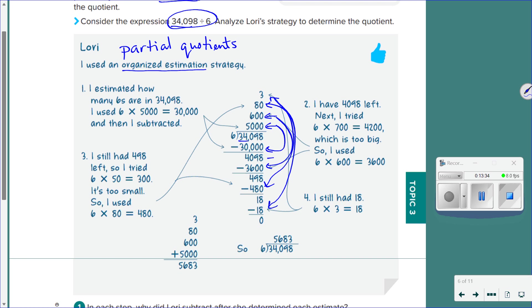She just basically took it by place. She said, started at 34,000. The closest she'd get was 30,000. Then she said, okay, I've got 4,000 left. I can do that. 600 gives me 3,600. Then she said, okay, I'm still at 498. That gives me 80. So 480. That left her 18. She's like, oh, I know that one. That's 6 times 3. So, now that she's got all the pieces, to figure out what the actual answer is, she has to add all the pieces together.